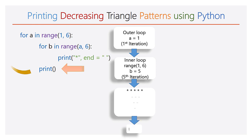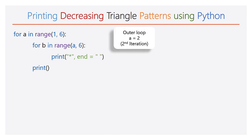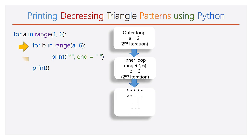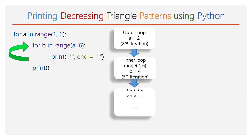Then the cursor will move to a new line. The execution will go to the outer for loop. The value of a is incremented by 1, so now the value of a will be 2. During the second iteration, the range of b will be 2 to 6. Now this will print 4 stars in the second line, 1 star during each iteration. Hence there will be 4 iterations.